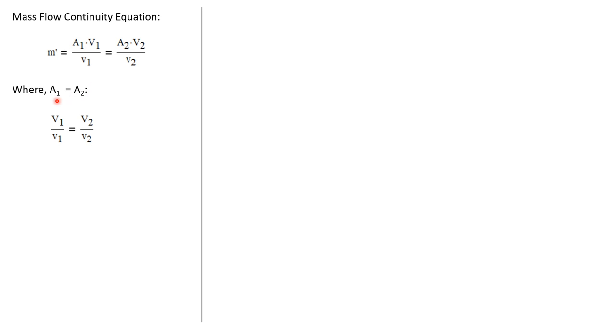So in this situation, we have a constant diameter pipe. So we know that A1 equals A2. I can simplify this continuity equation. It's just the velocity divided by the specific volume at state one equals the velocity at state two divided by its specific volume.